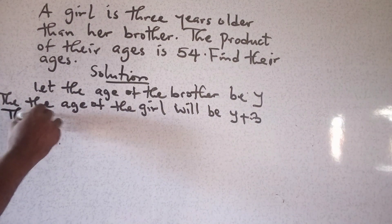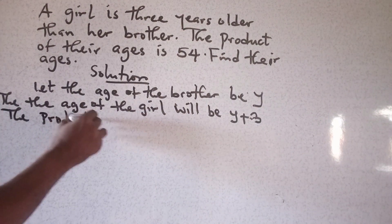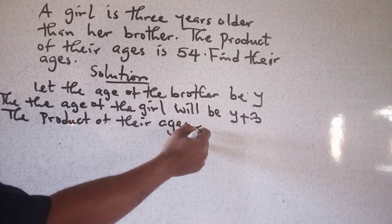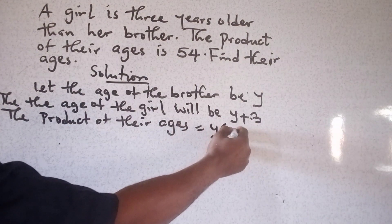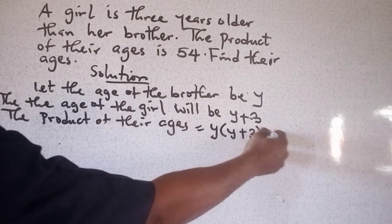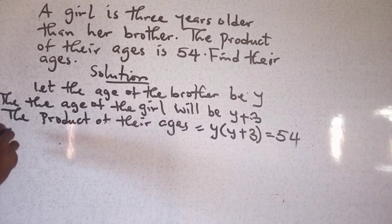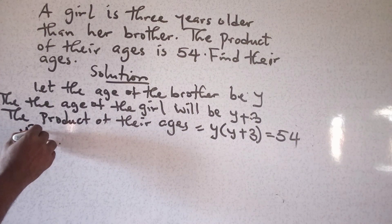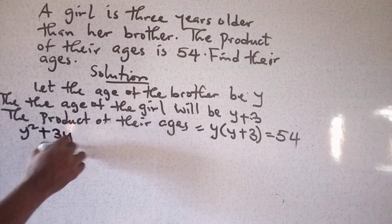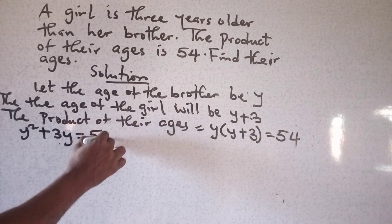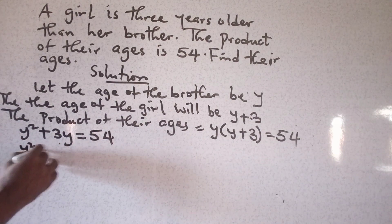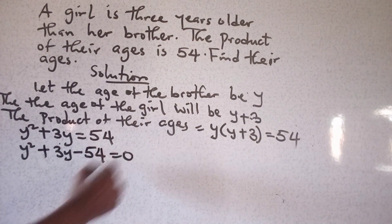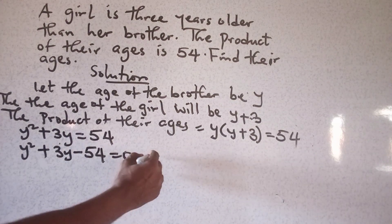So the product of their ages equals Y times (Y plus three), which equals 54. We multiply out to get Y squared plus three Y equals 54.